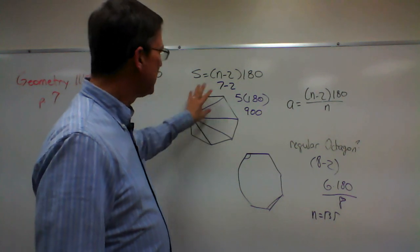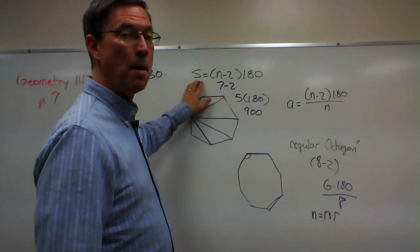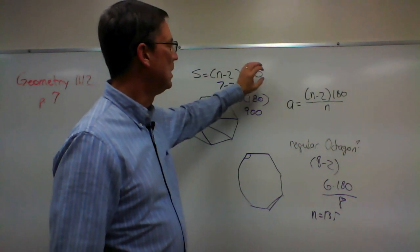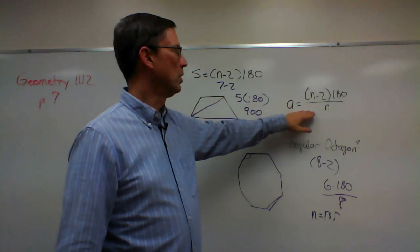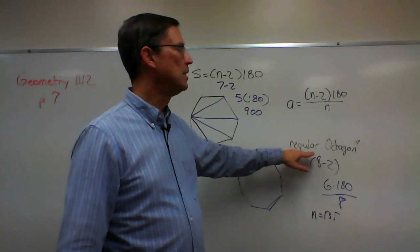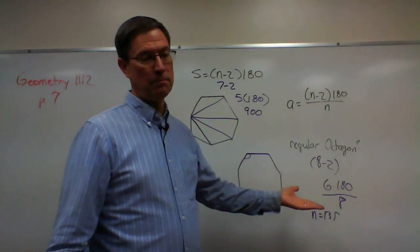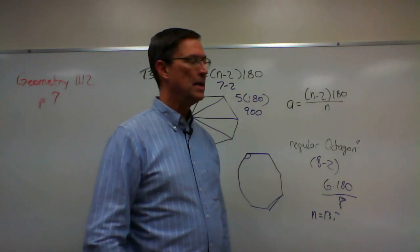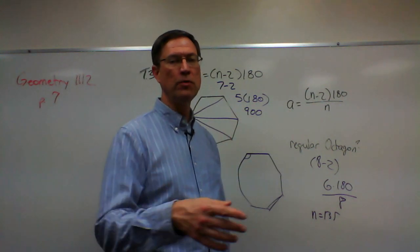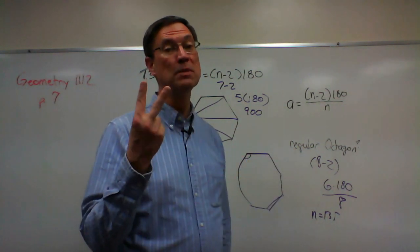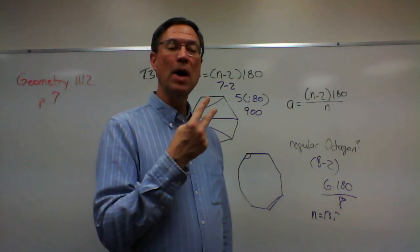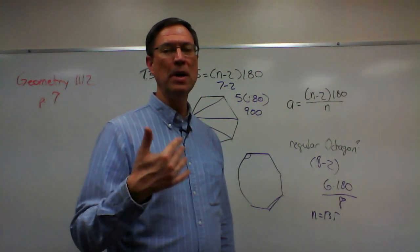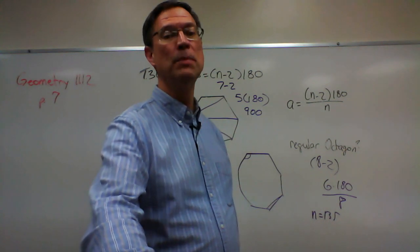We can figure out the sum for every single convex polygon using the first formula. The second formula only works to find each individual angle if the polygon is regular. They give you some problems to solve using these formulas, and you do need to have both formulas memorized. As you're using them, think about them and try to commit them to memory — you will use them on the check-up, self-test, and pace test.